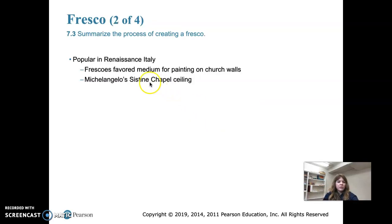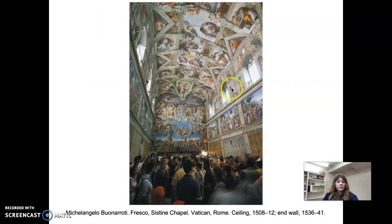Michelangelo's Sistine Chapel ceiling is probably the best known example of fresco painting. Fresco was favored during the Renaissance for painting the insides of churches — their ceilings and walls. Michelangelo initially refused to paint the Sistine Chapel ceiling because he wanted to devote his time to sculpture, but a request from the Pope was hard to turn down. He eventually gave in and in his 30s worked on the ceiling from 1508 to 1512.